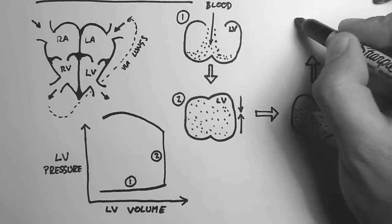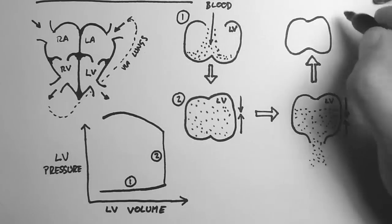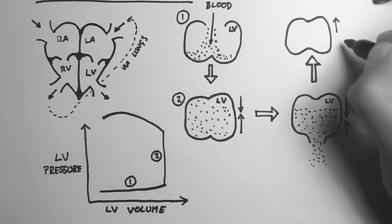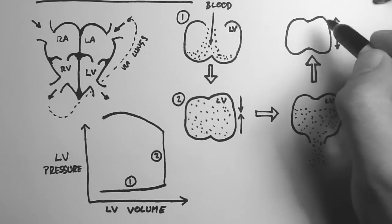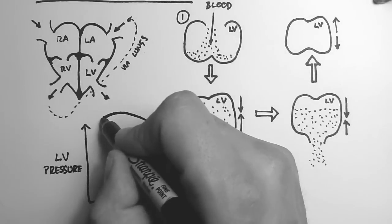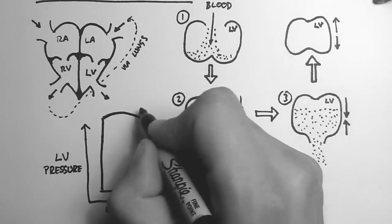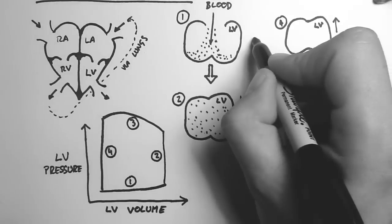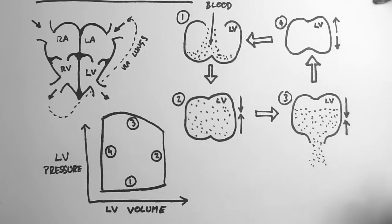The last step is the closure of the aortic valve and the relaxation of the left ventricle. This means that there's no change in volume because no blood is moving in, but the pressure is going right down. So that's step three and step four. The left ventricle is then ready to complete this cycle again.